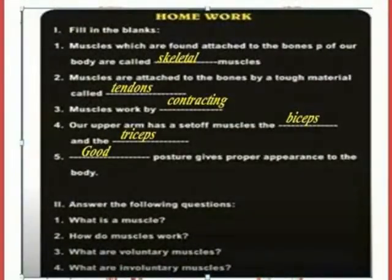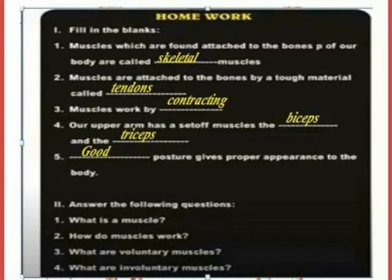Muscles found attached to the bones of our body are called skeletal muscles. Muscles are attached to bones by a tough material called tendons. Muscles work by contracting. The upper arm has a set of muscles: the biceps and the triceps. Good posture gives proper appearance to the body.